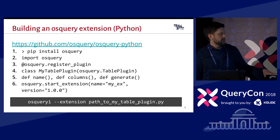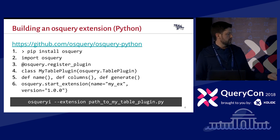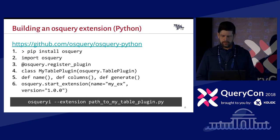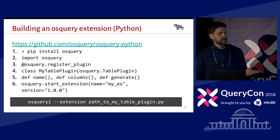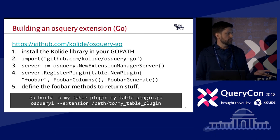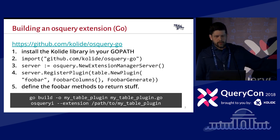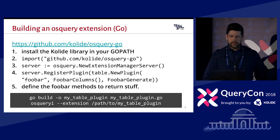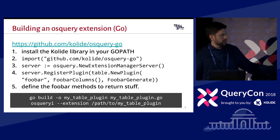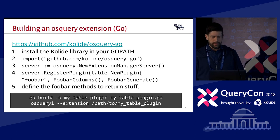These aren't even the only two options — you can also write in Go. Over at the Collide GitHub, which is another location not linked from the main document, you can work in Go if that's your preference. It's well documented, and you can write a Go language extension in about five steps.